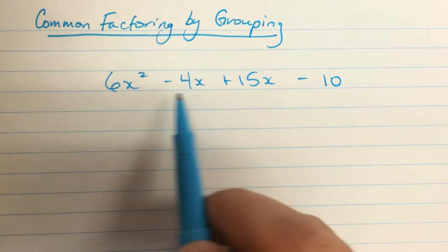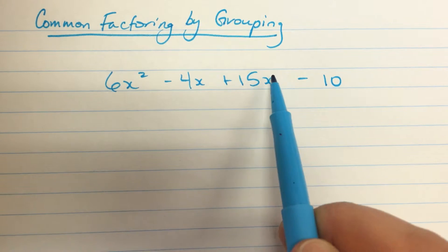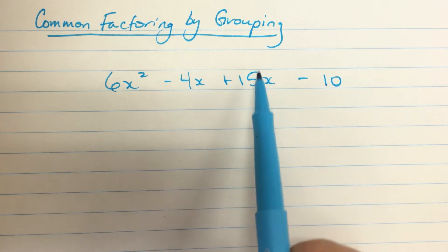This is degree 2, degree 1, degree 1, and degree 0, a constant term. Exponents are 2, 1, 1, and there's an x to the 0 that we don't write here. So when they're in descending order like this, and I've carefully crafted, see these two linear terms.